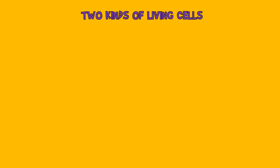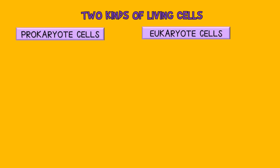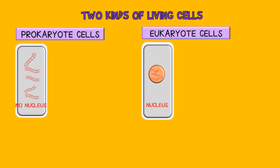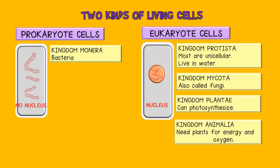Now this becomes complicated. There are two major types of cells: prokaryote cells and eukaryote cells. The big difference between them is that prokaryote cells do not have a nucleus that holds the DNA. There is only one group of living organisms that are prokaryote — these are the bacteria, thought to be the oldest living things that ever existed on Earth. All other living organisms are made of eukaryote cells, including the protists, mycota, plants, and animals.